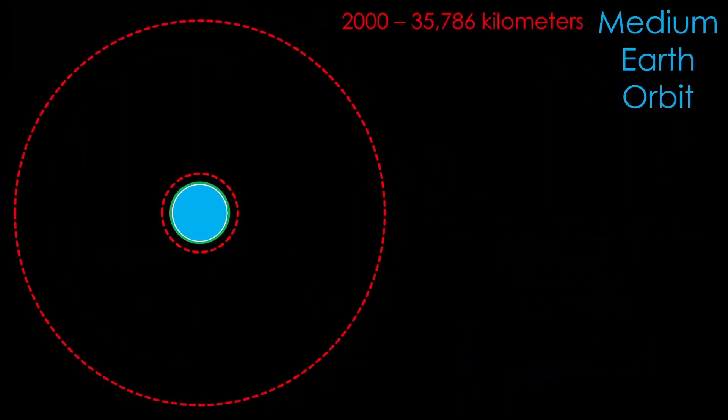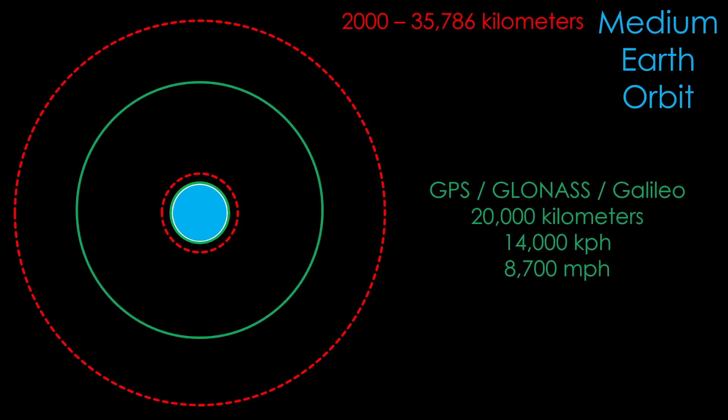Medium Earth orbit is a bit weird. It runs from 2,000 kilometers all the way out to a very specific distance of 35,786 kilometers. More about that number in a minute. Probably the best known satellites in this orbit are navigation satellites, with the US GPS system, the Russian GLONASS system, and the European Galileo system. All orbit at about 20,000 kilometers.